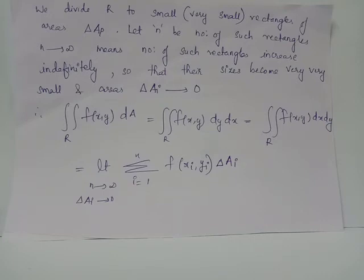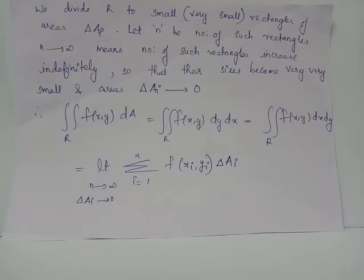These integrals correspond to the area of the bounded region R, in which f of xy is a continuous and bounded function. This exactly equals limit n tends to infinity, summation i from 1 to n, f of xi yi multiplied by delta Ai. Notice that f of xi yi is defined for every corresponding delta Ai.